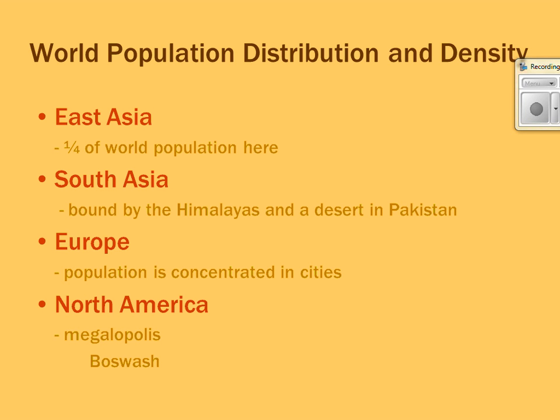Speaking of North America, one vocab term you need to know is megalopolis — a super city that develops from many smaller cities whose populations travel so easily between them that it becomes one major super city. We call the one on the northeastern seaboard 'Boswash' because it spans cities between Boston and Washington D.C. — specifically Boston, Washington D.C., New York City, Philadelphia, and Baltimore.